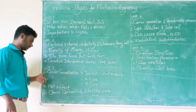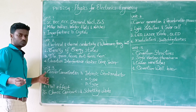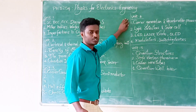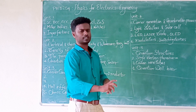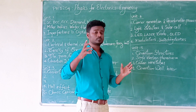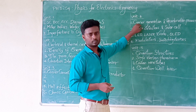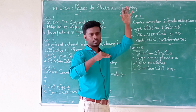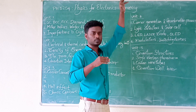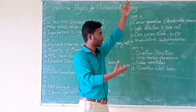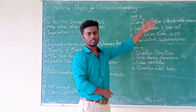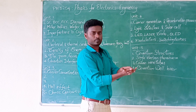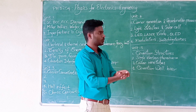Unit 4 covers carrier generation and recombination. Carriers are electrons and holes. How are they generated? When an electron gains energy, it gets excited. Then we have two parts: electrons and holes — that is carrier generation. For recombination: when an electron loses energy and releases it, it recombines with a hole. That is the recombination process.